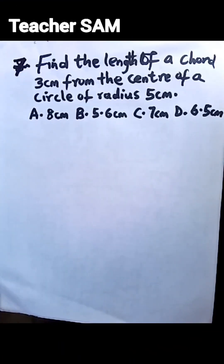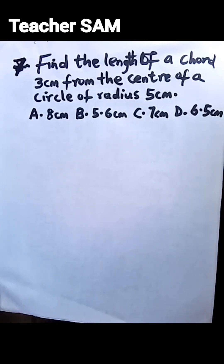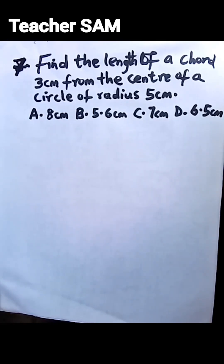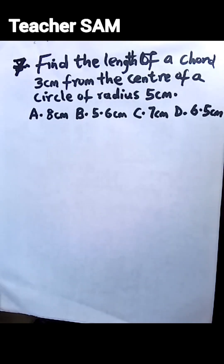We have another question before us. The length of a chord 3 cm from the center of a circle of radius 5 cm. We are given some options. Option A: 8 cm. Option B: 5.6 cm. Option C: 7 cm. And Option D: 6.5 cm.